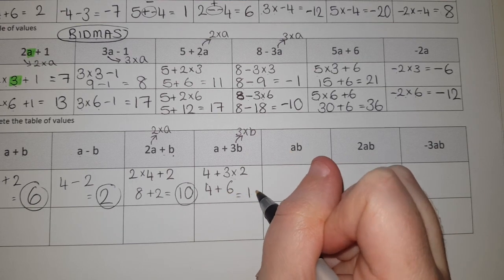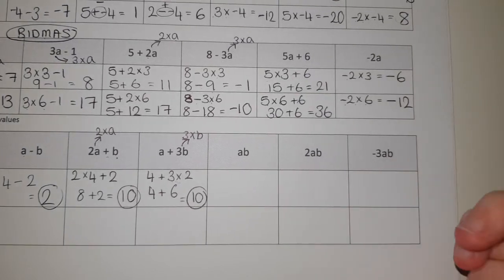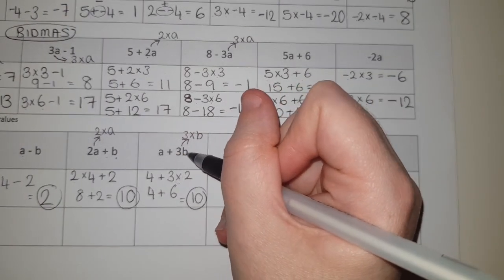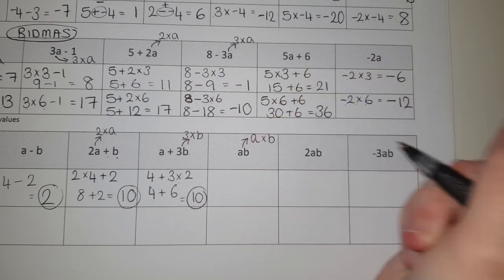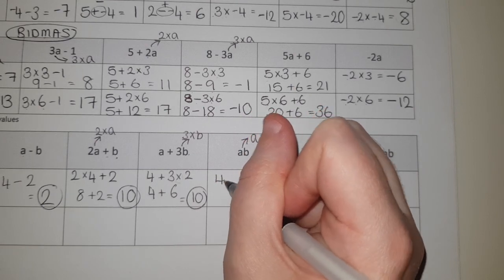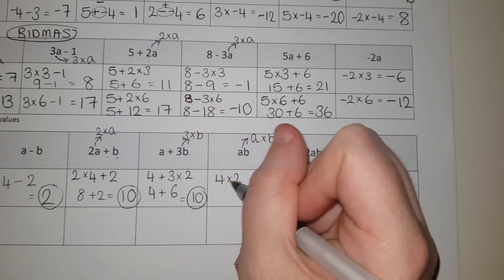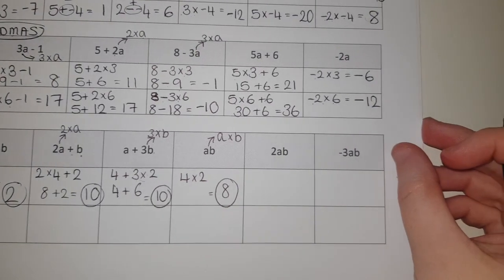Okay, now remember when we've got letters together, just like when we write a number and a letter, there is actually a times sign in between. So it actually means A multiplied by B. So A multiplied by B - well, A is four, B is two - four times two gives me eight.